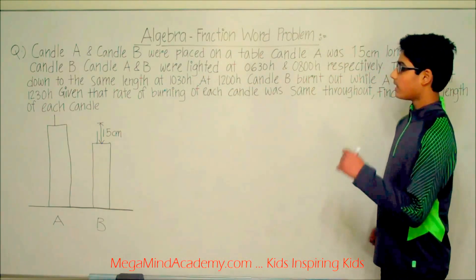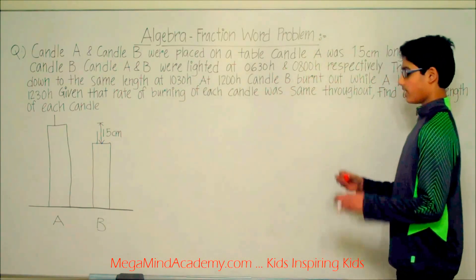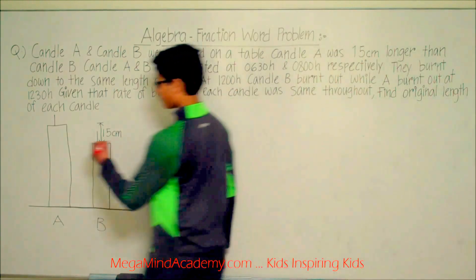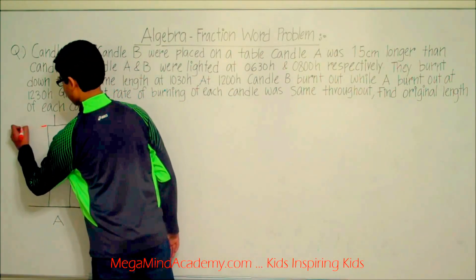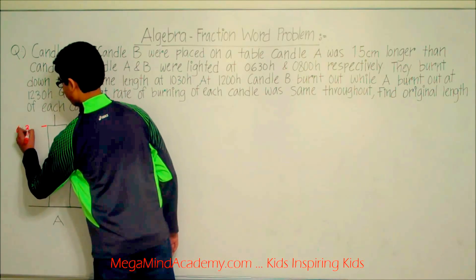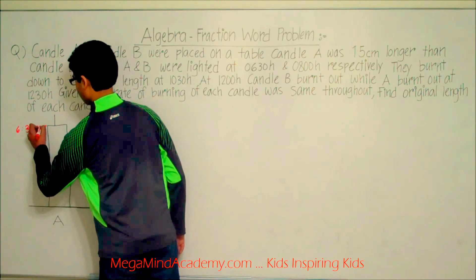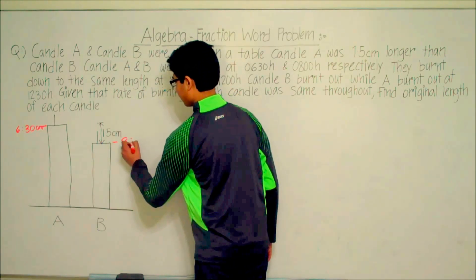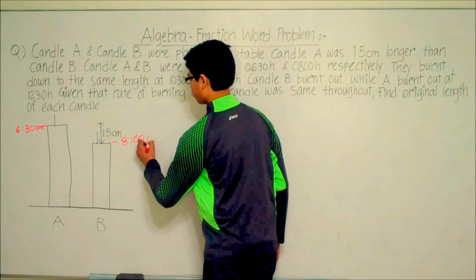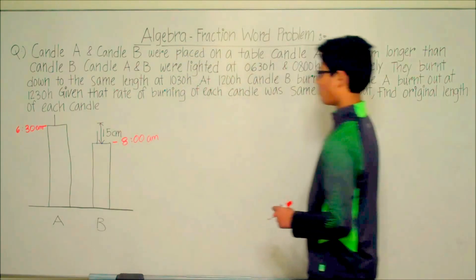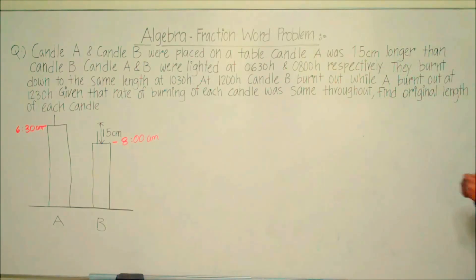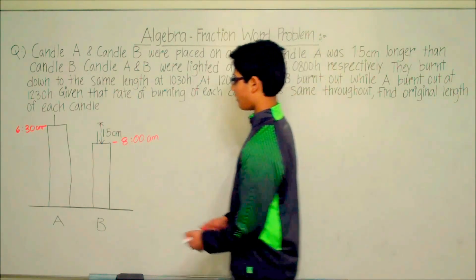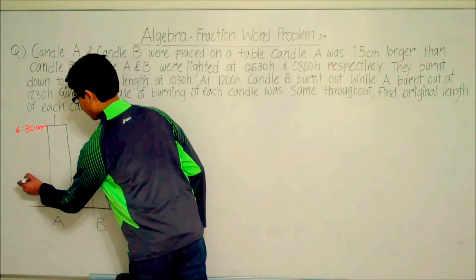We know that Candle A and B were lighted at 6:30 a.m. and 8:00 a.m. respectively. So Candle A was lighted at 6:30 a.m., and Candle B was lighted at 8:00 a.m. We know that they burnt down to the same length at 10:30 a.m.